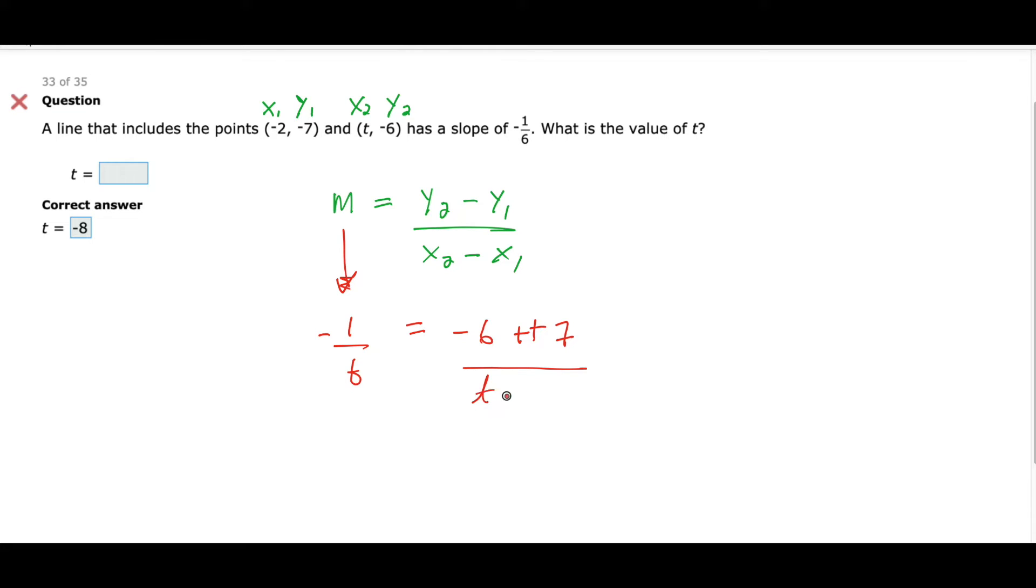Okay, over t minus minus 2, which is plus 2. Alright, so you have -1/6 equals -6 plus 7 over t plus 2. Okay. -1/6 equals what? 1 over t plus 2.